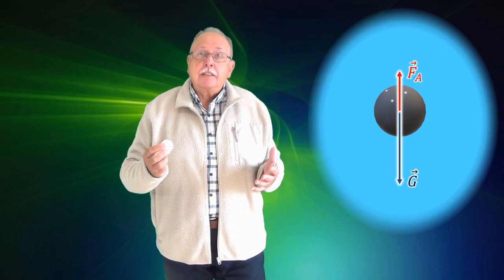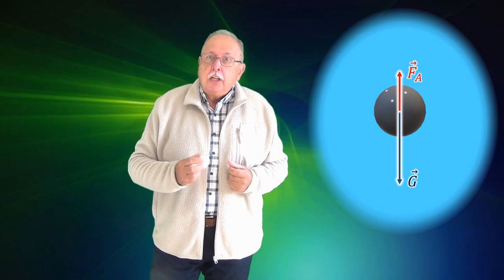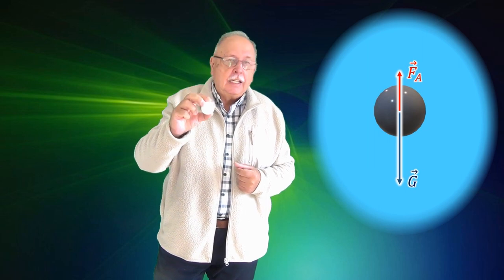Acum să ne gândim că avem o bilă de același volum, dar din aluminiu. În aer ea ar cântări cam 160 de grame, iar în apă cam 100 de grame. Asta nu se poate să nu simți. Este o variație relativă de aproape 40%. Și atunci, cu cât ar trebui să fie mai mare o altă bilă de aluminiu decât bila noastră pentru ca greutatea ei aparentă în apă să fie egală cu greutatea bilei noastre? Cu mult.